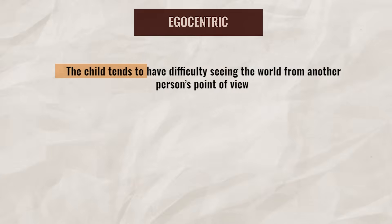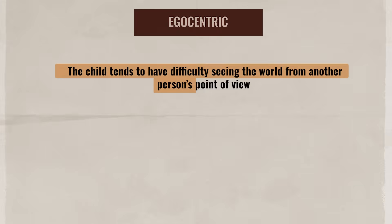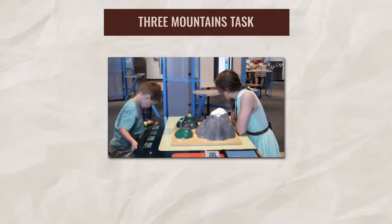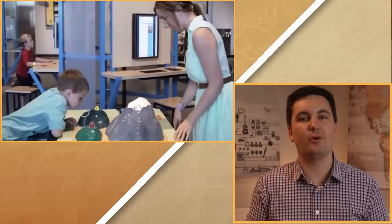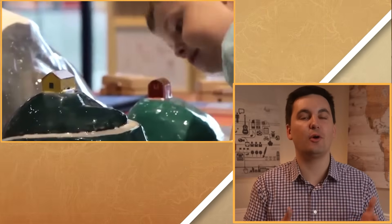Children during this stage are also egocentric, meaning they have difficulty seeing the world from another person's point of view. To test this, Piaget had children complete his Three Mountains task. A child would look at a model of three mountains, then a doll would be placed in the model and the child asked to pick a picture showing the doll's perspective. If the child picked the picture showing their own perspective, it indicated egocentrism.